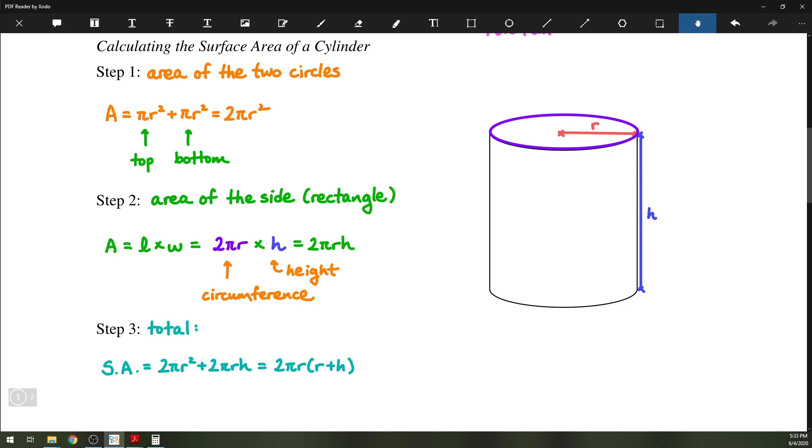So next we're going to do some examples with the new formula that we have, 2 pi R squared plus 2 pi R H.